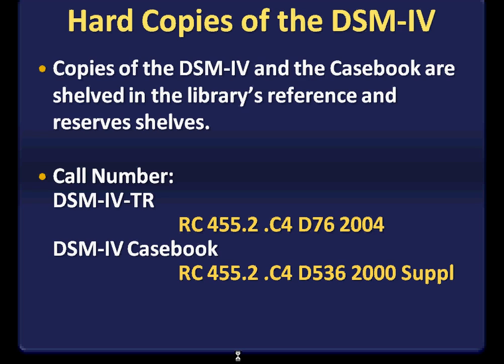You don't have to memorize the call number — it just helps you identify where it's located on the shelves. You can look it up in the online catalog by typing in DSM-4, or you can locate these call numbers on the library subject guide created for this course. This is the end of the third tutorial on using online resources and hard copy sources to find the DSM. Please go to the next section, part 4, in which examples are given on looking for hard copy books in the library on your specific disorder topics.